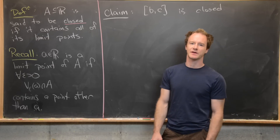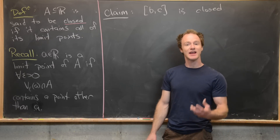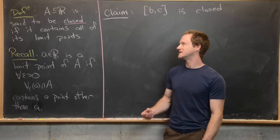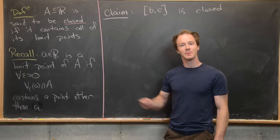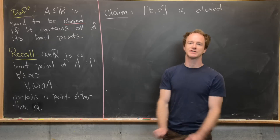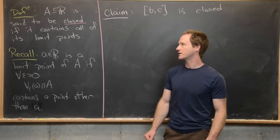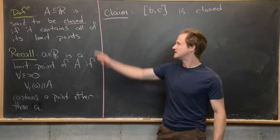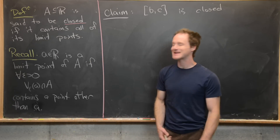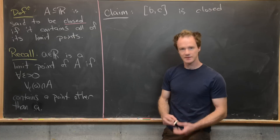We're continuing our study of the topology of the real numbers. Here we want to look at the notion of a closed set. So let's look at the definition first. A set A of real numbers is said to be closed if it contains all of its limit points.